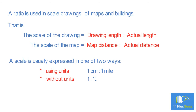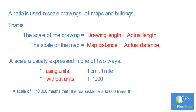Note: a scale of one to ten thousand means that the real distance is ten thousand times the length of one unit on the map or drawing.